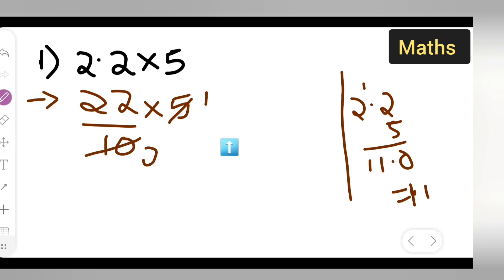2 ones are 2, 2 elevens are 22. So what is your answer? Your answer is 11. I hope you understood how to multiply using this method too.